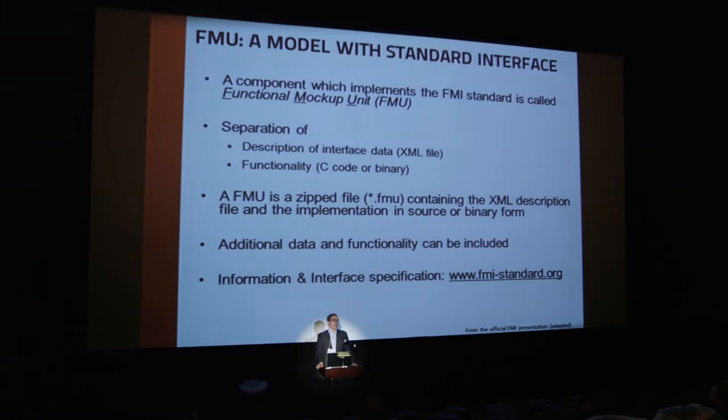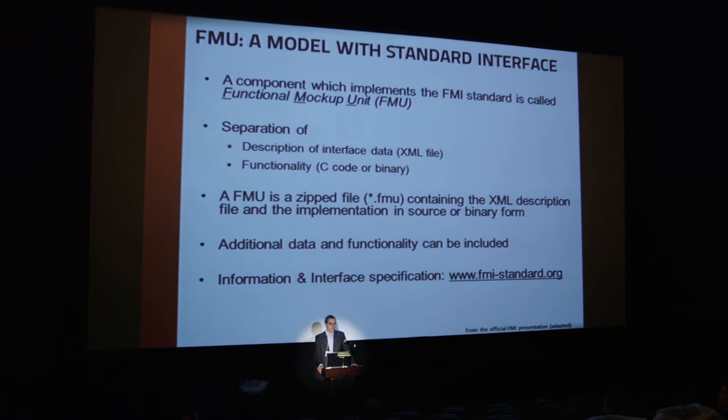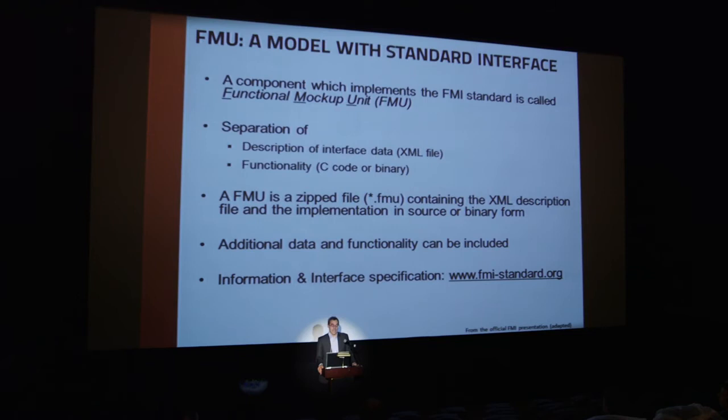I come now from the motivation to the more technical part. An FMU is a unit that complies to the functional mock-up interface — it is a model with a standard interface. An FMU is divided into two main parts: there is a description of the interface data in an XML file, and the actual functionality can be either C code in order to support hardware-in-the-loop, or binary compiled code depending on the use case. The FMU is a zip file containing the XML description file and the implementation in source or binary form. Binary is much more common at the moment, but source code is necessary for compilation to specific hardware.